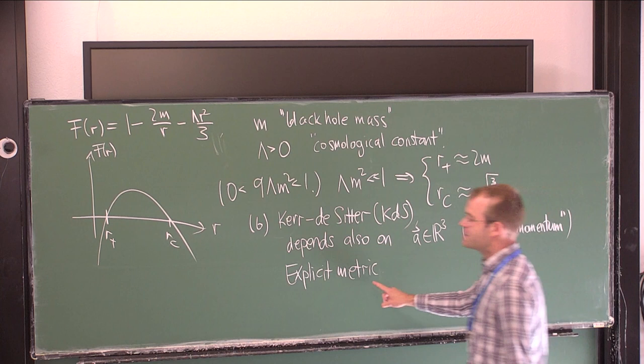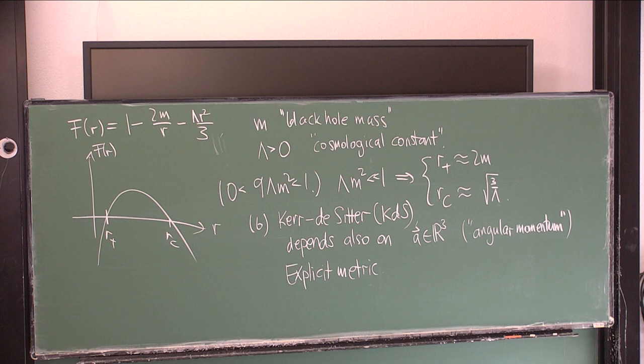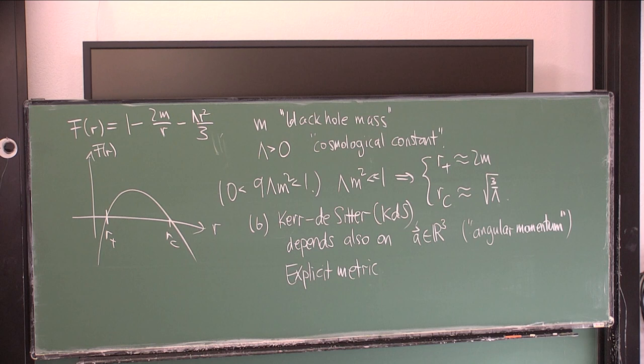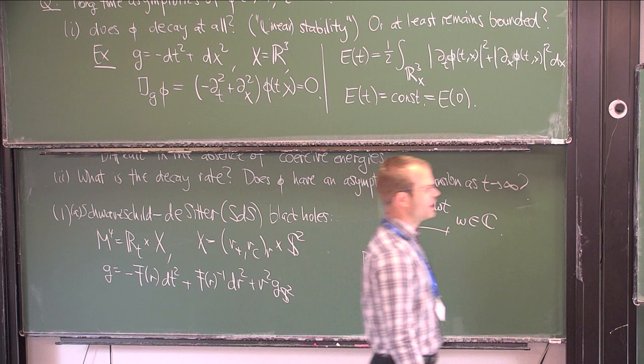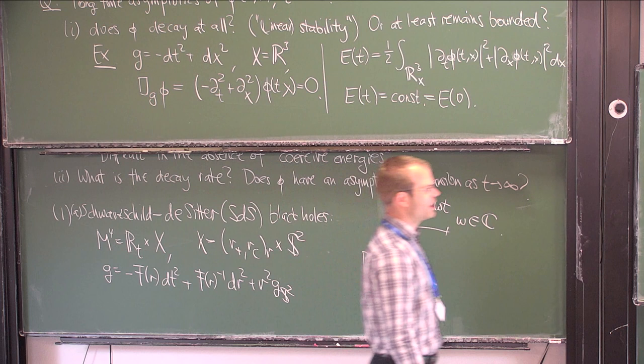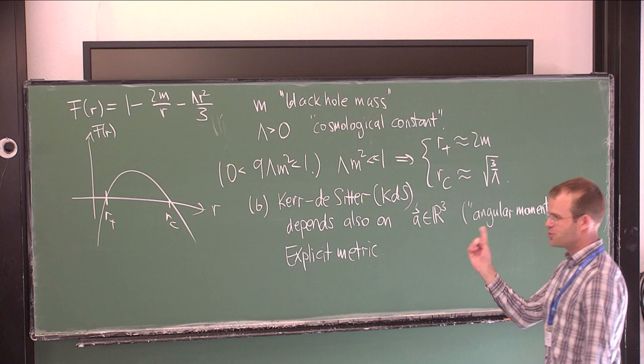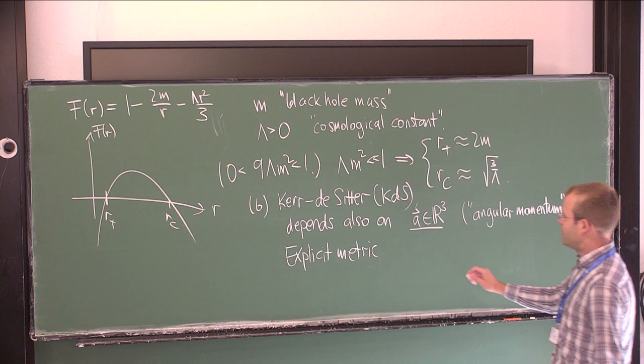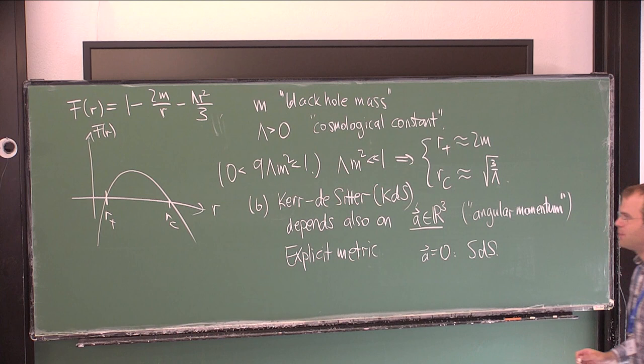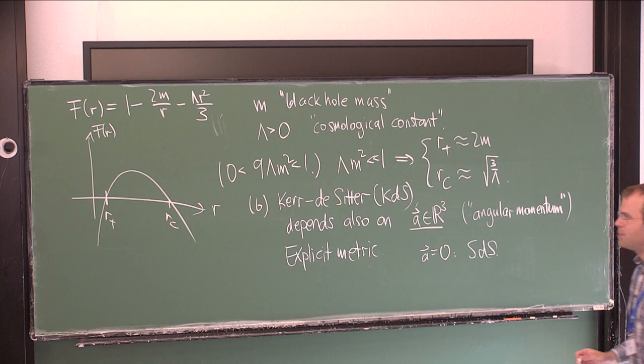These metrics are basically the unique solution of the Einstein vacuum equations that have spherical symmetry — already discovered in the 1920s. The Kerr-de Sitter solution was found by Carter in 1968. It's also a solution of that equation without spherical symmetry but with axial symmetry, describing a rotating black hole with axis of rotation given by the vector A. When A equals zero, you recover the Schwarzschild-de Sitter family.